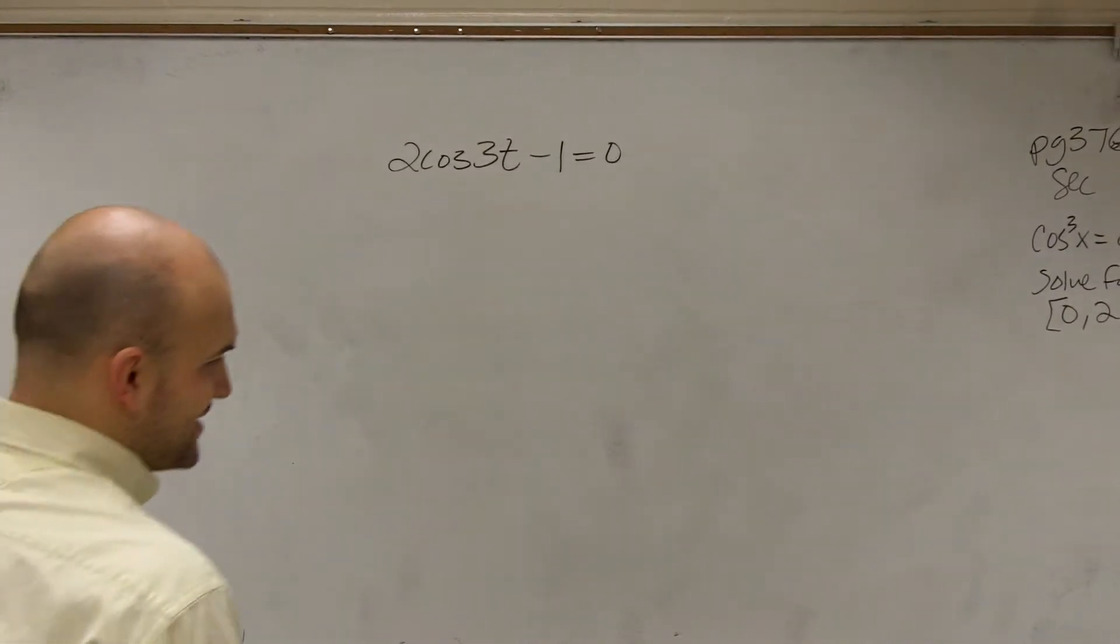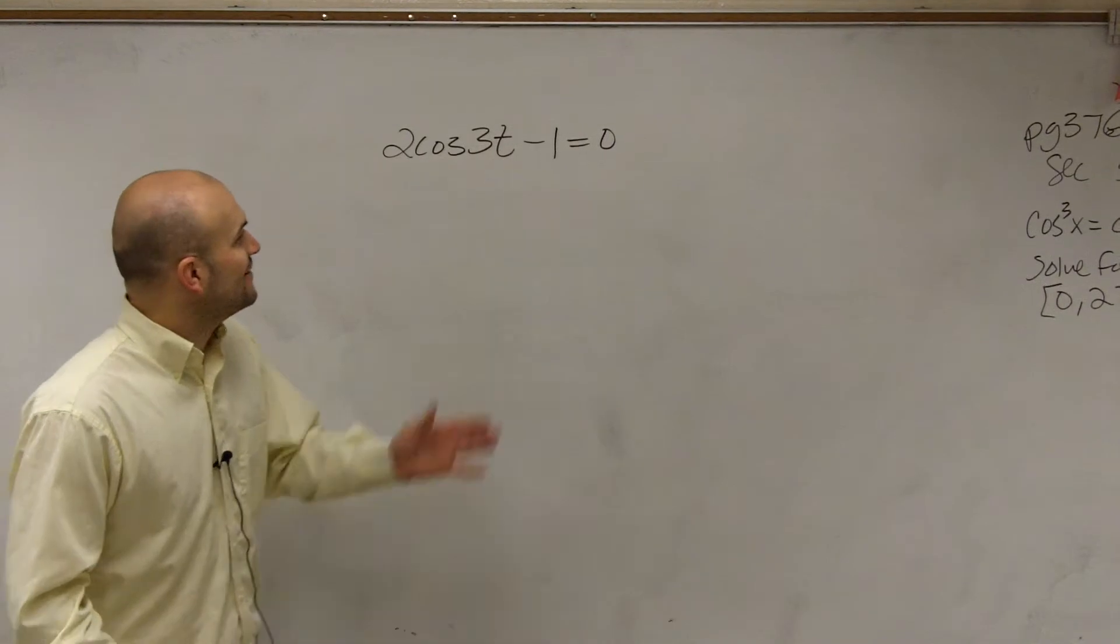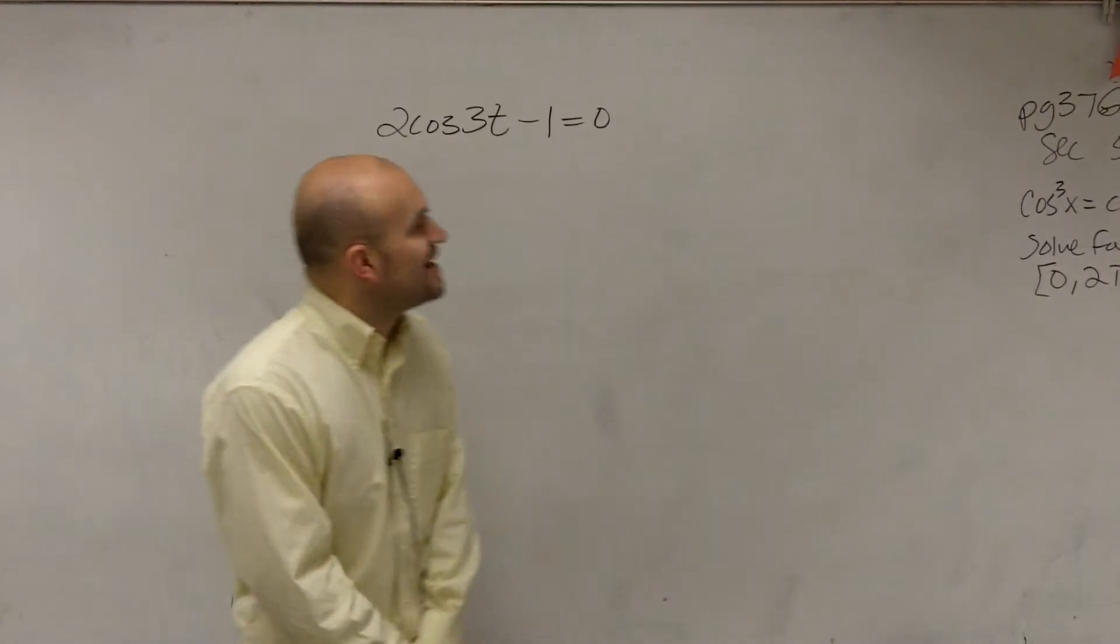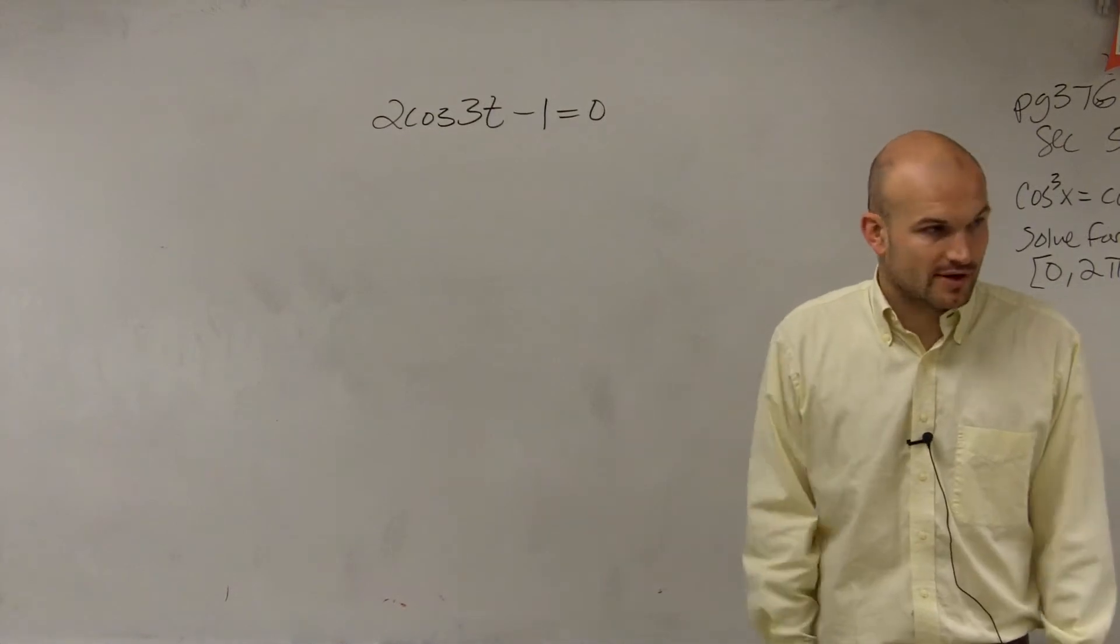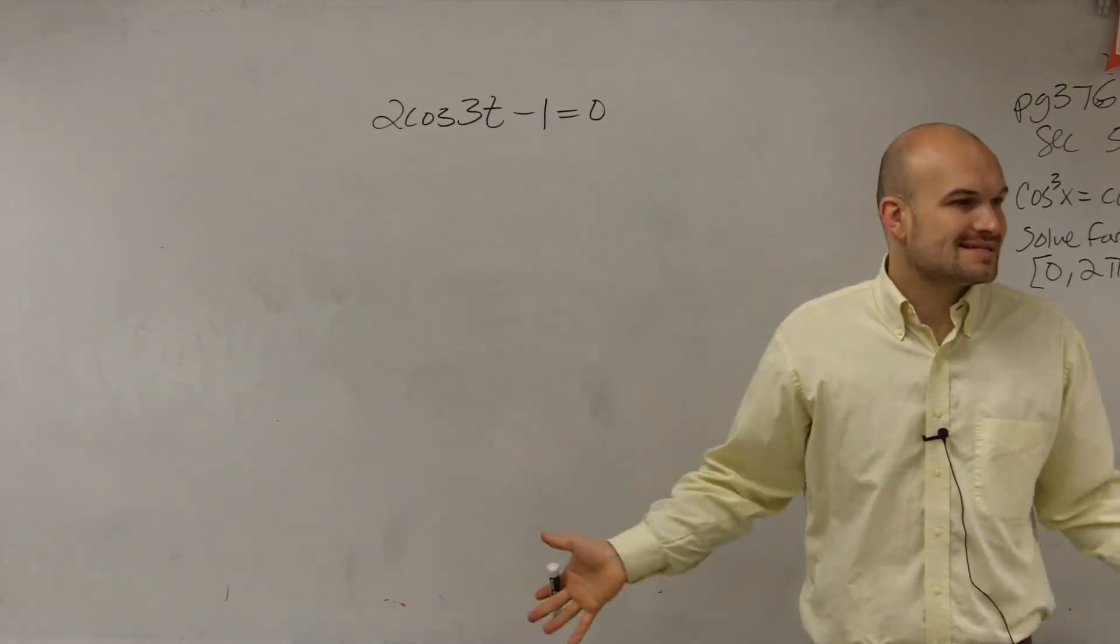Right, now I just got really quiet and awkward. So we have 2 cosine of 3t minus 1. So this is very similar to the exact problem that I just went over, right? Just do the exact same thing.